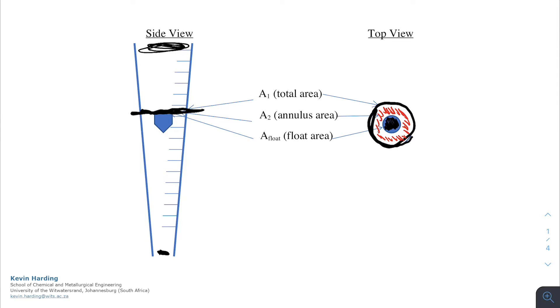Area A2, depending on where this float is sitting, is going to change as is the total area. If the float is at the top, there is a larger area of the annulus, whereas at the bottom there is a smaller area.